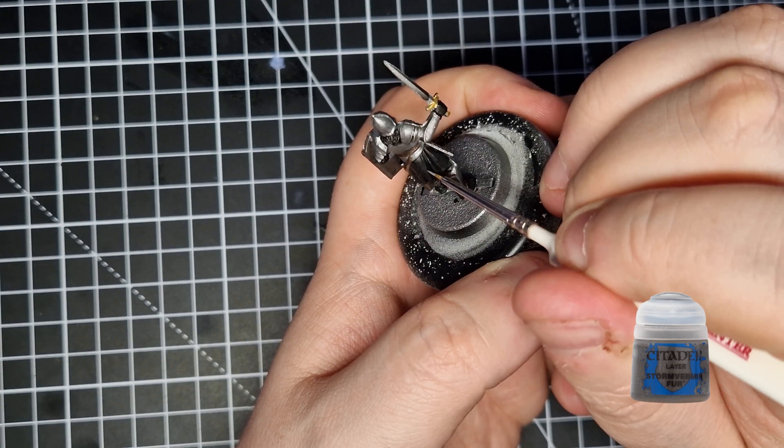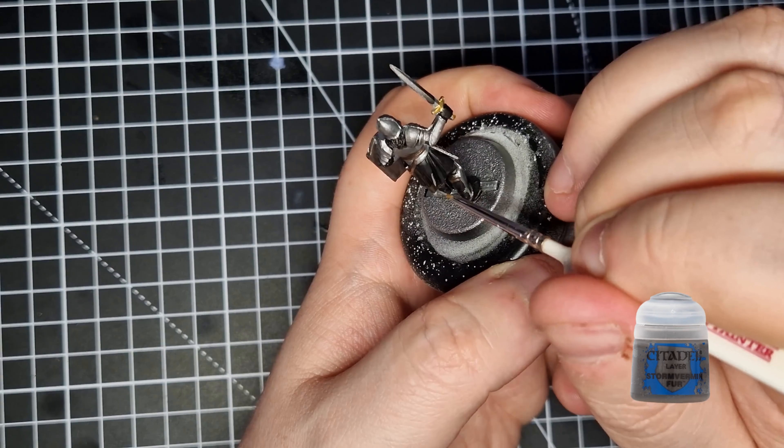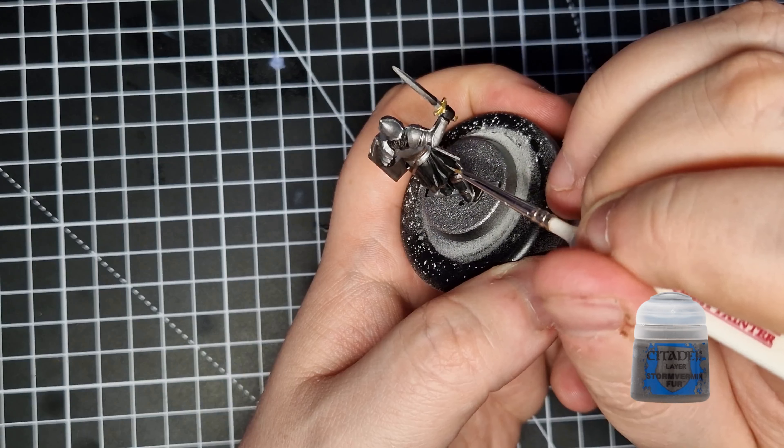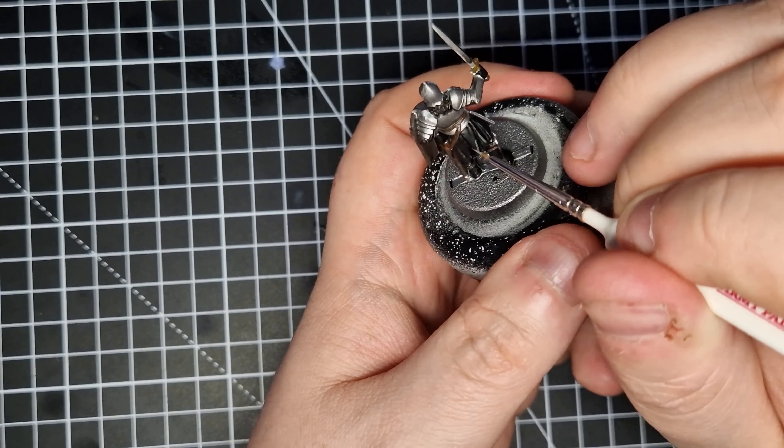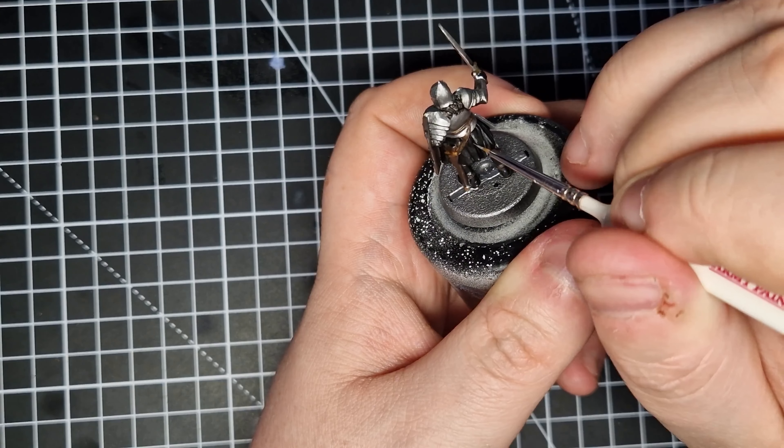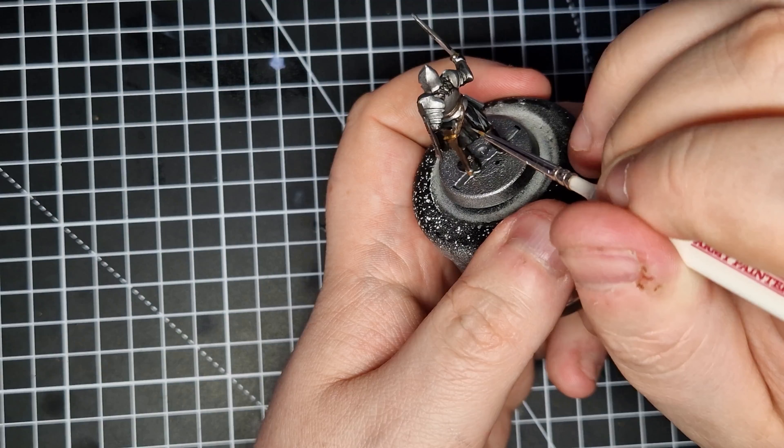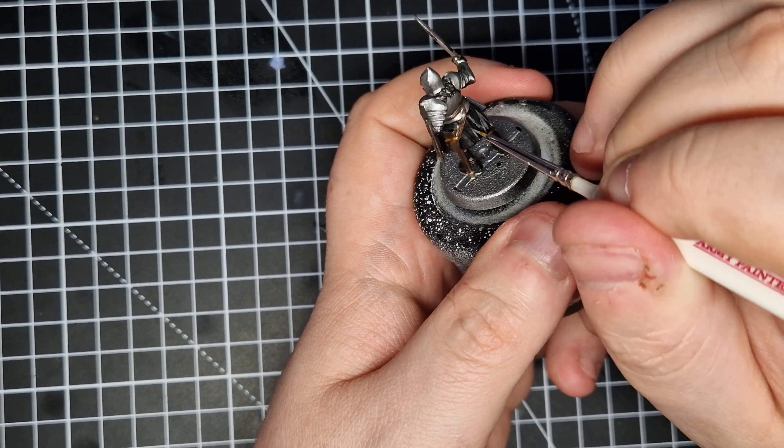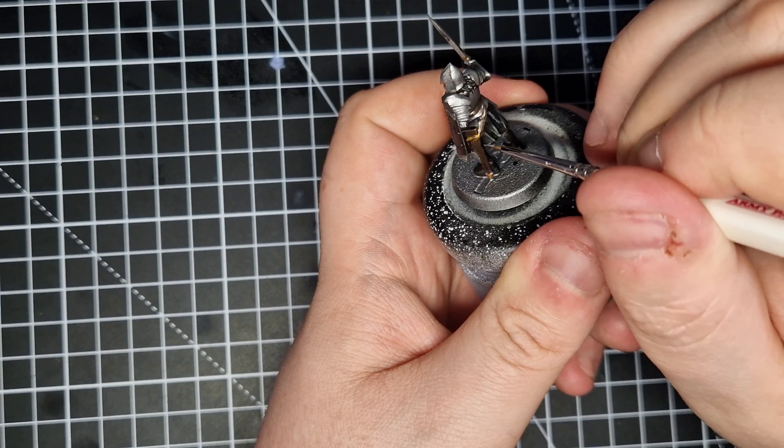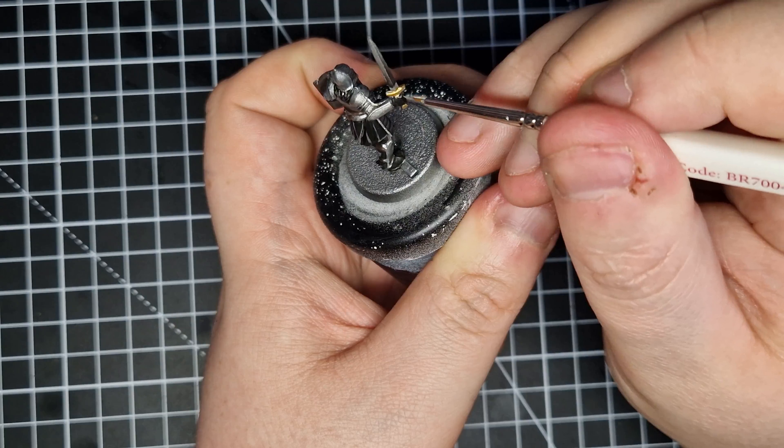Now we're going to highlight all of the black areas and to do that we're going to use Stormvermin Fur. We're going to highlight the raised areas of the skirt or the kilt, I don't know what it is he's wearing, the thing he's got around his waist. We're going to highlight the raised areas of that as well as the bottom just to give it a little bit of depth rather than just plain black. We're going to highlight the gloves as well so knuckles and fingertips on the gloves.